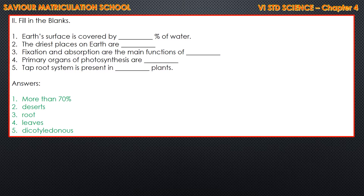Third: Fixation and absorption are the main functions of root. Fourth: Primary organs of photosynthesis are leaves. Fifth: Tap root system is present in dicotyledonous plants. So the answer is dicotyledonous plants.